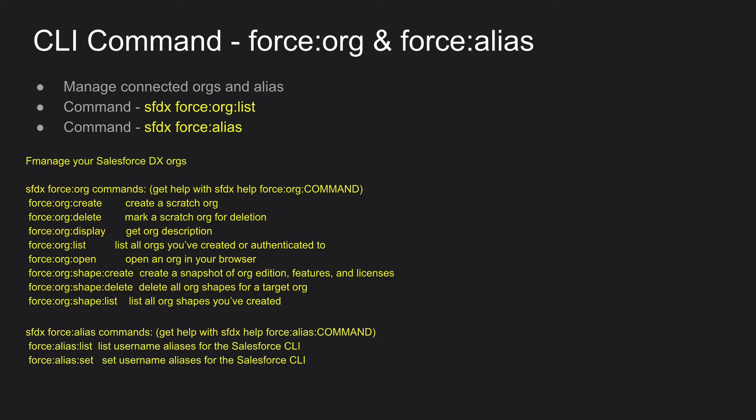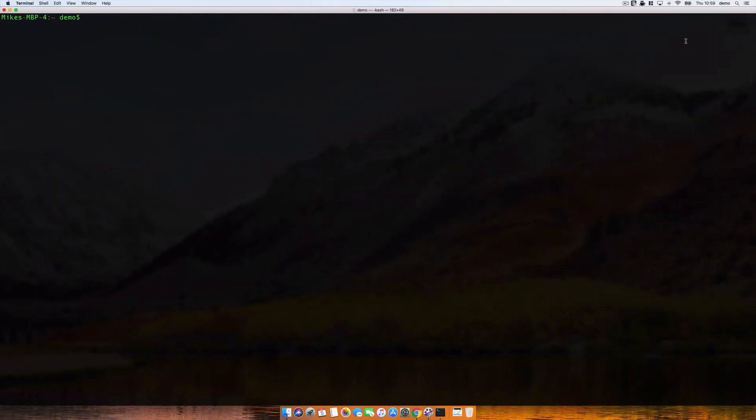Then we're going to look at what you can do once you've connected your org. You can open your org very quickly. If you've got lots of orgs, you could connect them all up and then you're a few commands away from just opening it up — in some ways it's quicker than a password manager. As you connect up all your different orgs, you'll need a way to alias them so that you can open them up quicker. So let's go to terminal.